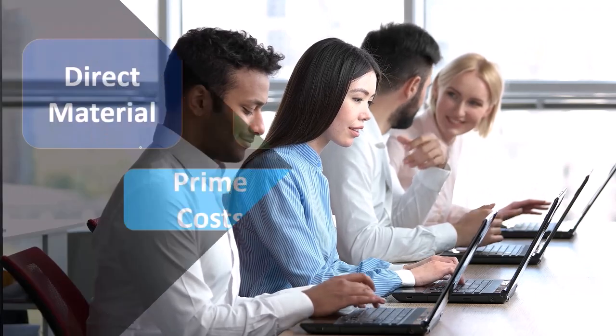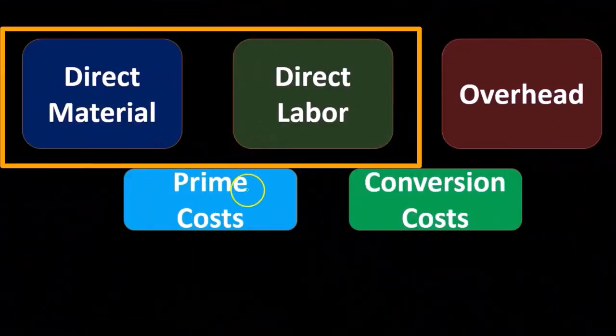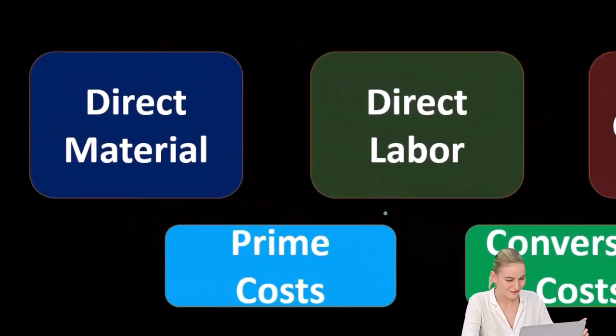Remember that our direct costs are going to be direct materials and direct labor—both are direct costs, which happen to be the two prime costs as well, but for different reasons. These two are direct costs because we can apply those activities to a particular unit.